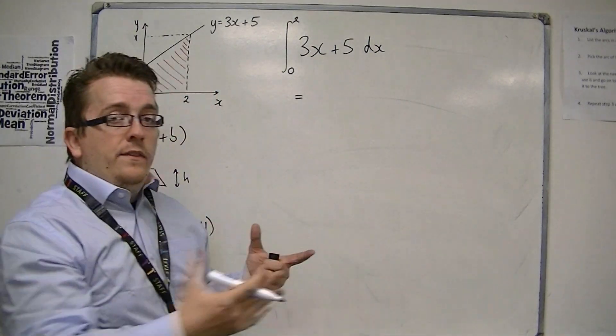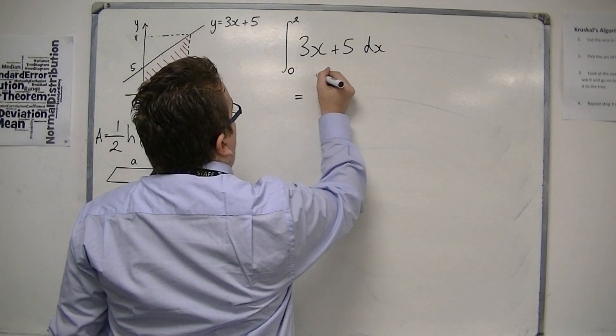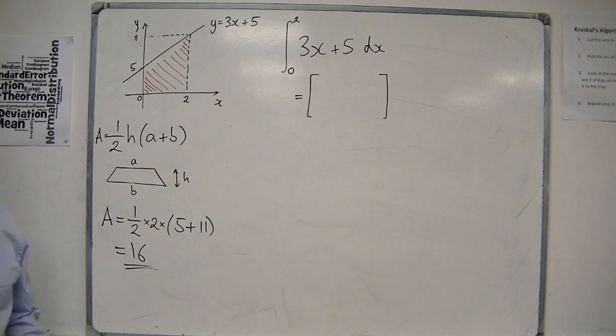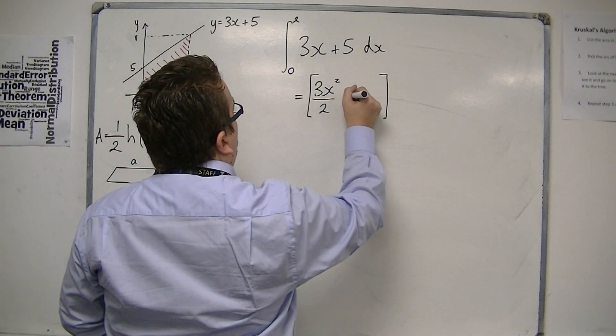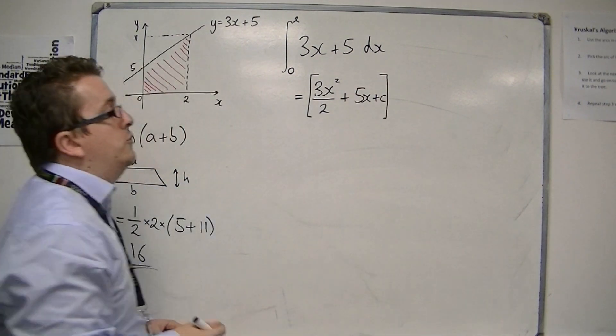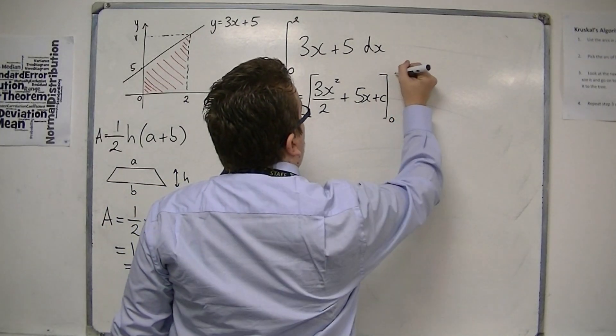Now you integrate this normally, and we put the integral in square brackets. So we get 3x squared over 2 plus 5x, and then we've got that constant of integration c. And I'm integrating between 0 and 2.